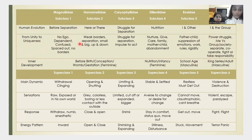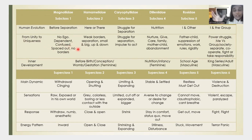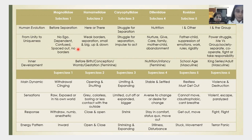In the first subclass there's no ego — they're completely dependent, confused, spaced out, with no borders and no sense of space. 'I am completely dependent on you.' The inner development is before birth: conception, womb, gestation — very feminine.